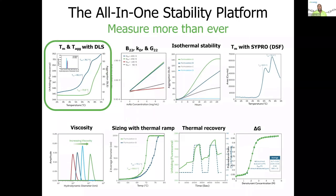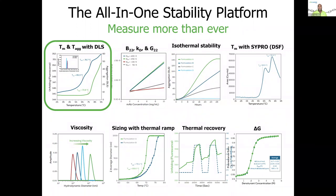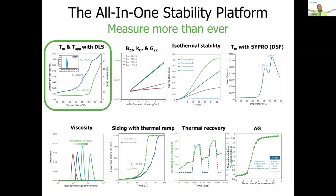This poster summarizes some of the applications which can be done with the UNCLE. You can see quite a bit: Tm, Tag, melting temperatures, aggregation temperatures, with the ability to measure size. We also have the ability to do B22, kD, and even G22. There are isothermal evaluations, CPRO for people who've done that historically, refolding studies, and Gibbs free energy — Delta G — is built in as well. I'm going to focus today's presentation mostly around the melting application, Tm and Tag, with a little bit of sizing by DLS, and we'll see exactly how just that one application can be extremely powerful.